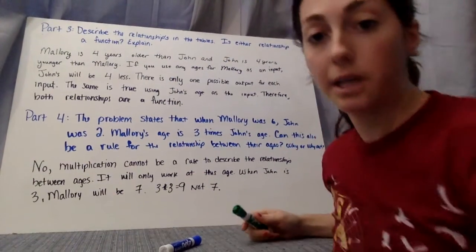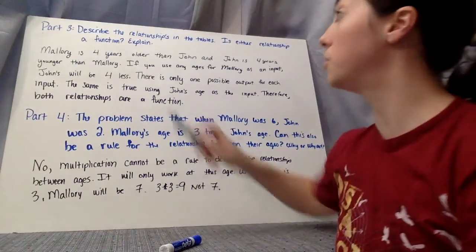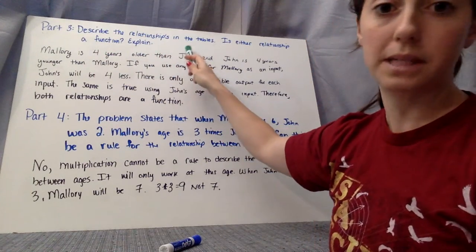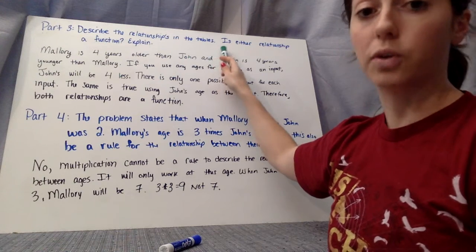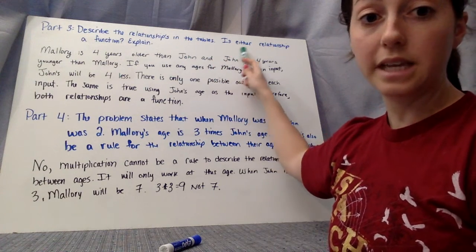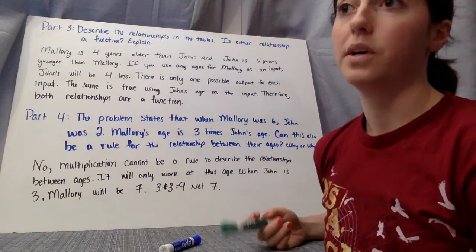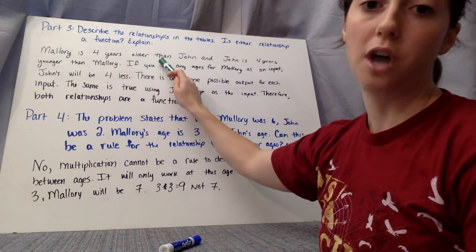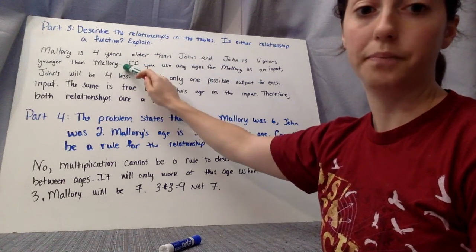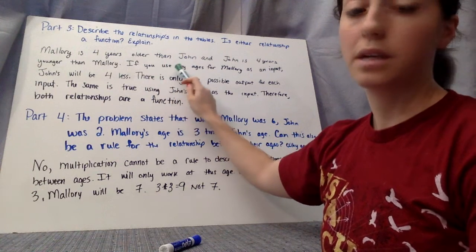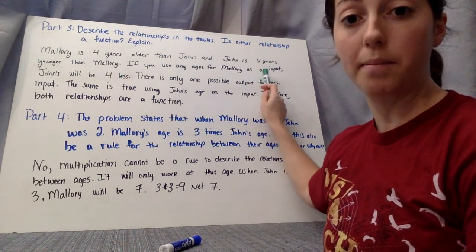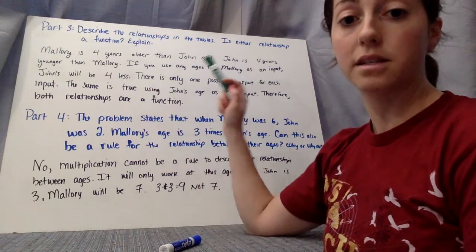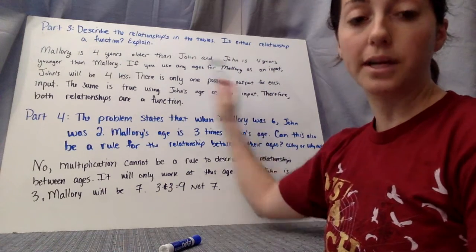Okay, so looking up here. Describe the relationships. This is part three. Describe the relationships in the tables. So you're looking at your tables. Is either relationship a function? So let's think. Mallory is 4 years older than John, and John is 4 years younger than Mallory. If you use any ages for Mallory as an input, looking at when Mallory was the input, John's age will always be 4 less. So there's only one possible output for each input.